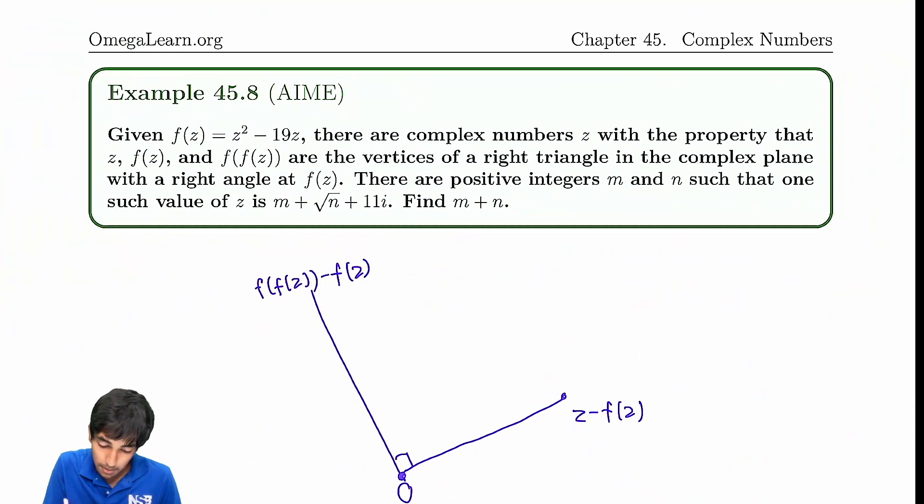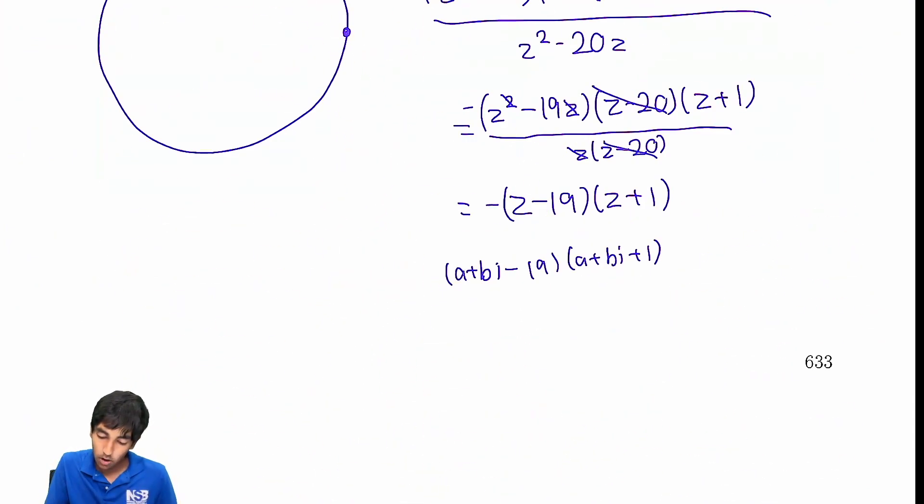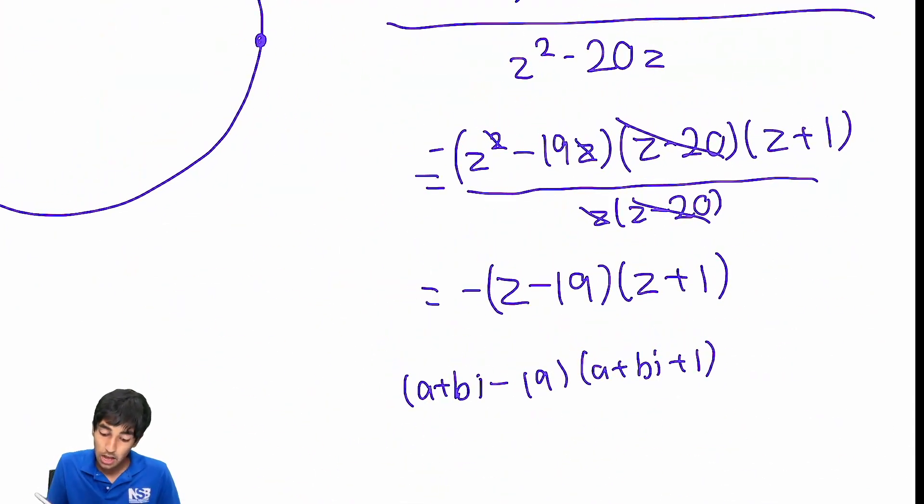And we're also given that the imaginary part of z is 11i. So we're already given a lot of information. The imaginary part of z is 11i, so this is just 11. And we're given that this whole thing is purely imaginary, so it has no real part. And now we just do some expansion. We get (a plus 11i) squared minus 18 times (a plus 11i), and then we subtract 19 at the end.